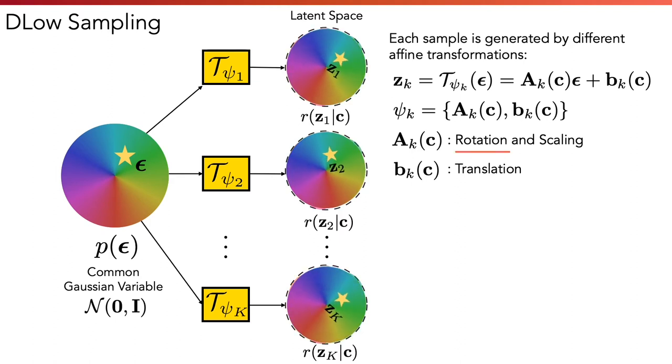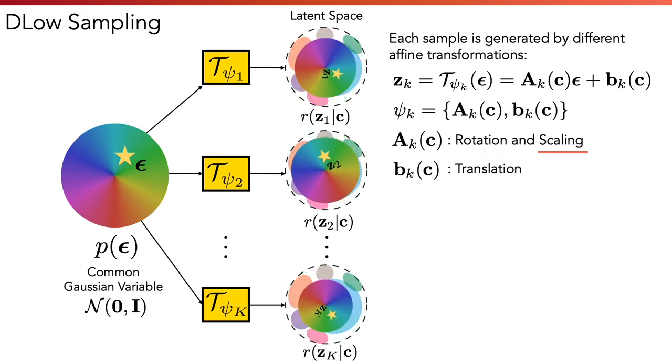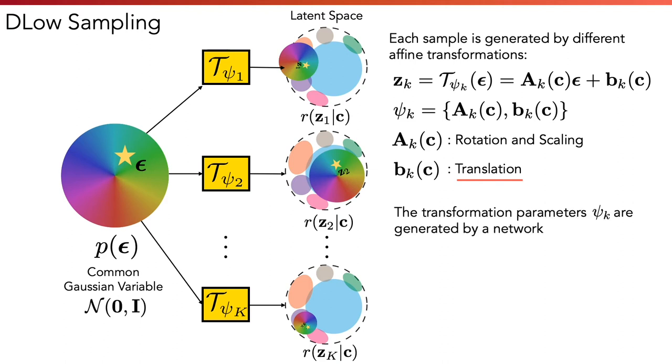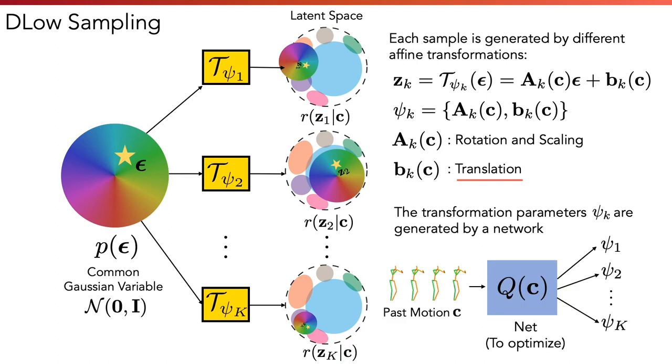By changing Ak, we will rotate the latent codes, and the latent codes z1 to zk are no longer the same, even though they cover the same space. Ak can also scale the latent codes, which in turn scales their sample space. Bk will translate the latent codes and their sample space. The transformation parameters psi k are generated by a network that is conditioned on past motion c. This is because the modes in the latent space are conditioned on past motion as well.